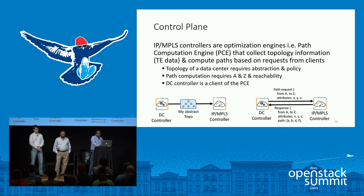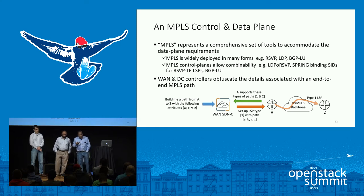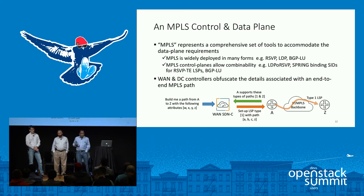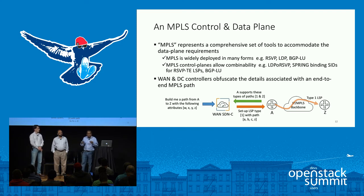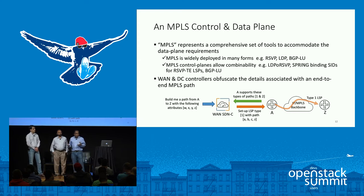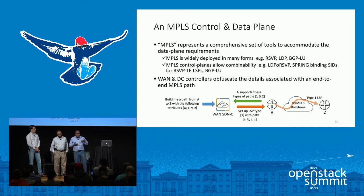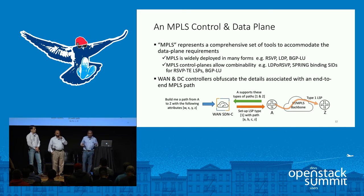MPLS provides a toolbox that can be used. We have RSVP, LDP, and BGP-LU for label distribution. MPLS also allows what we call combinability — you are not constrained by one particular distribution protocol. You can combine them, for example LDP over RSVP, or use a binding SID in segment routing terminology to bind disparate LSPs together. The beauty of this scheme, with the APIs and the WAN and DC controller working in conjunction, is that it can hide all that complexity from you completely.